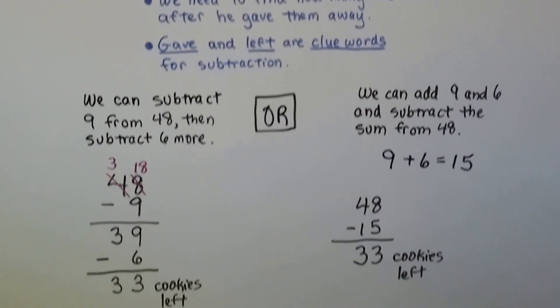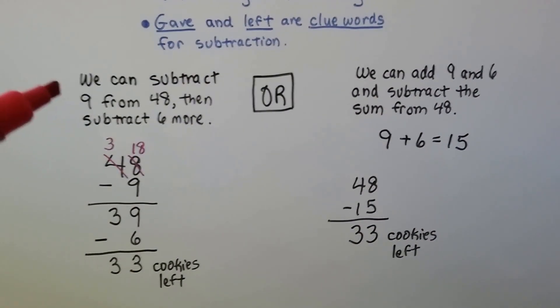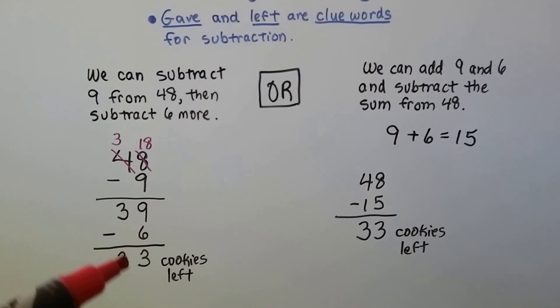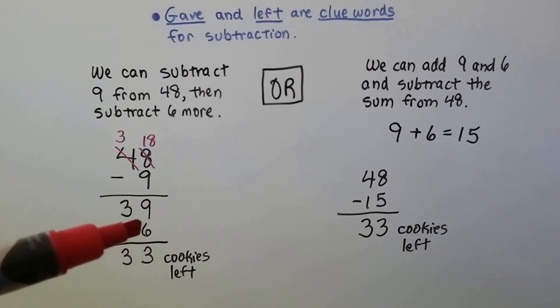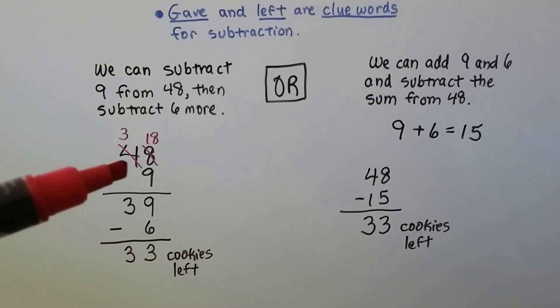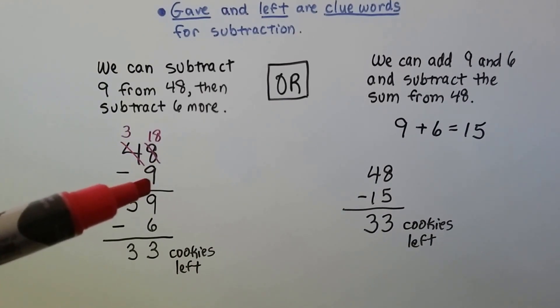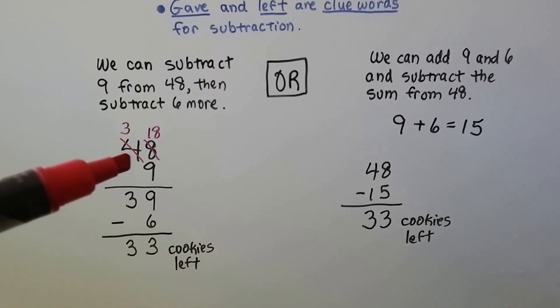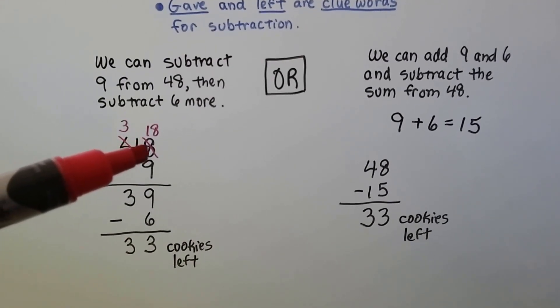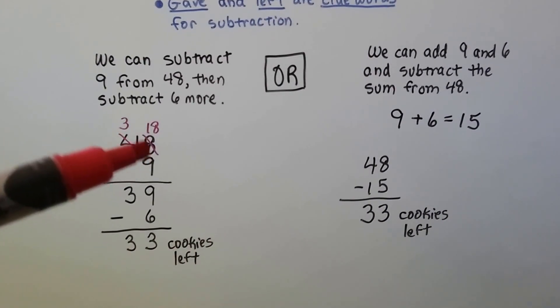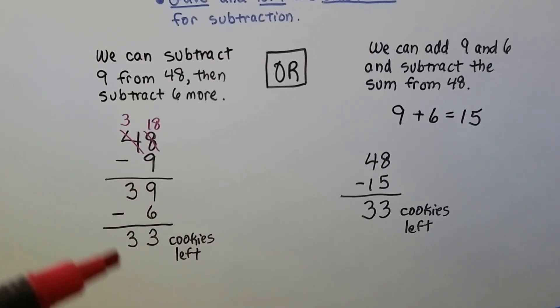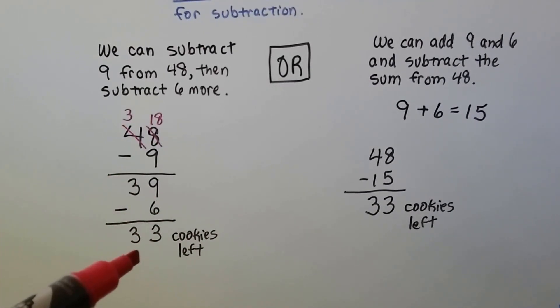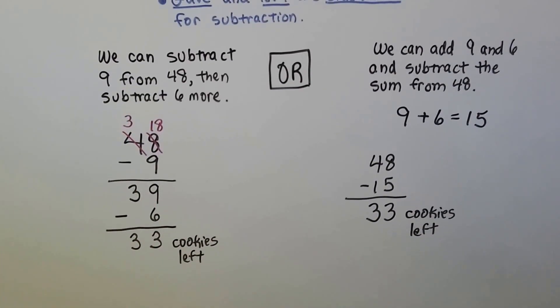We can solve it two different ways. We can subtract 9 from the 48 and then subtract 6 more. We do subtraction twice. 48 minus 9. The 9 is larger than the 8 so we have to regroup. The 4 becomes a 3 and we give that 10 to the ones place. The 8 ones becomes 18 ones and 18 minus 9 is 9. Then we take away the 6. 9 minus 6 is 3 and we drop the 3 down. So it says he has 33 cookies left.